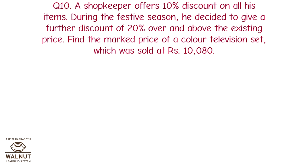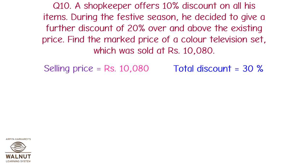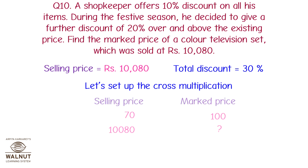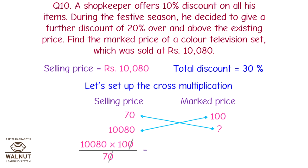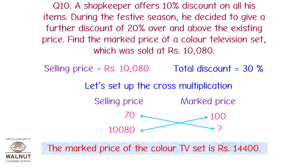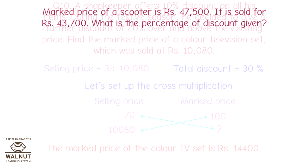A shopkeeper offers 10% discount on all his items. During the festive season, he gives a further discount of 20% over and above the existing price. Find the marked price of a color television set which was sold at Rs. 10,080. The selling price is Rs. 10,080. Total discount is 30%, so the selling price is 70% of the marked price. By cross multiplication: marked price = 10,080 × 100 / 70 = Rs. 14,400. The marked price of the color TV set is Rs. 14,400.